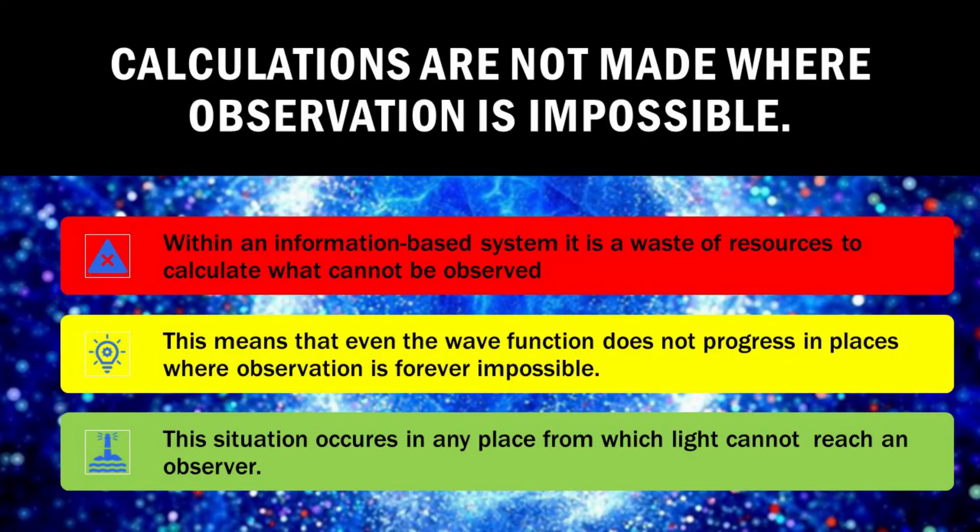Within an information-based system, it is a waste of resources to calculate what cannot be observed. This means that even the wave function does not progress in places where observation is forever impossible. This situation occurs in any place from which light cannot reach an observer.